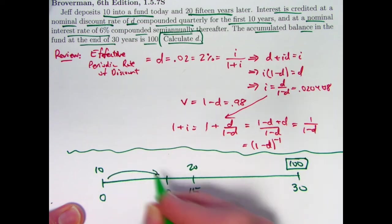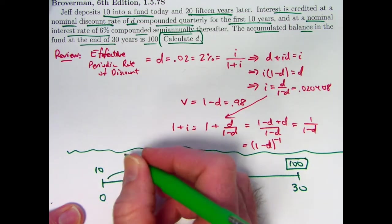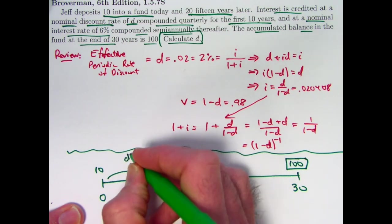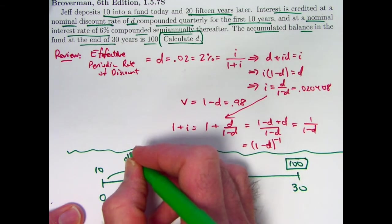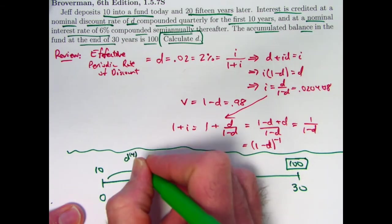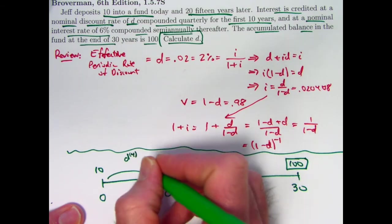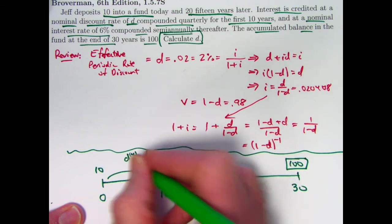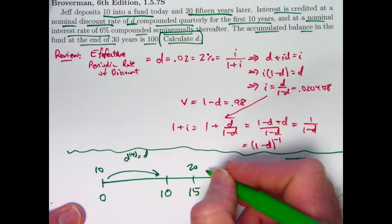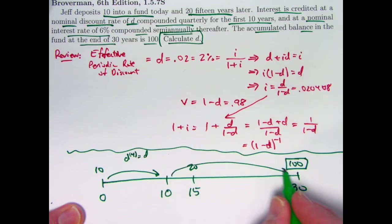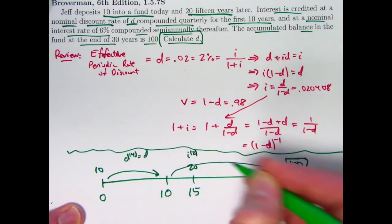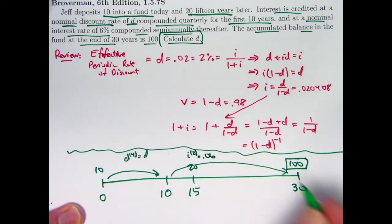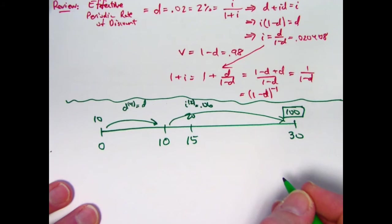But again, interest is being credited according to this nominal rate, D, compounded quarterly. I'm going to go ahead and use a common actuarial notation here that is different than D here. I'm going to put D with a superscript of 4 in parentheses here. That is common notation for a discount rate that is compounded four times per year, a nominal discount rate compounded four times per year. And ultimately, this is the same as D in this problem. And that's what I want to solve for. And then for the last 20 years, we've got this 6% rate. That's going to be a nominal rate compounded twice a year, 0.06 compounded semi-annually. All right, what do we do with this?